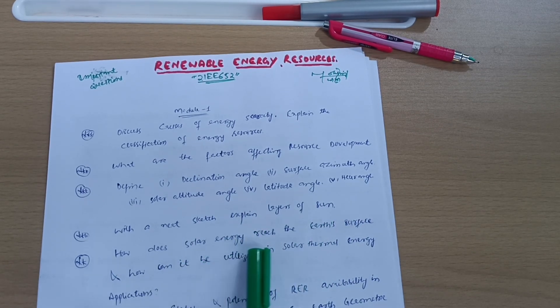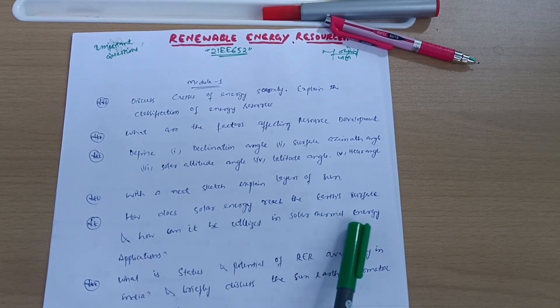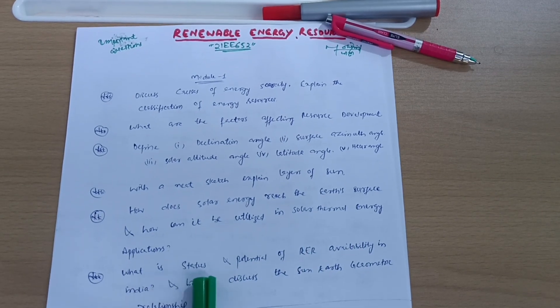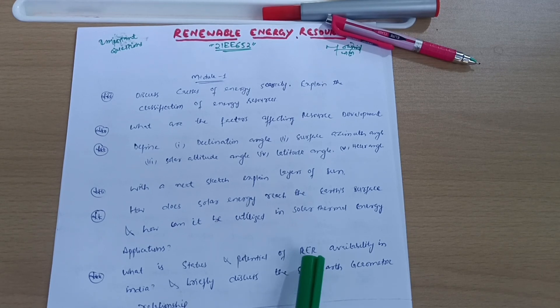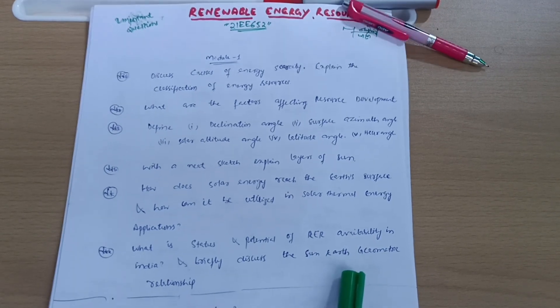With a neat sketch, explain layers of sun. How does solar energy reach the earth's surface and how can it be utilized in solar thermal energy applications? What is the status and potential of renewable energy resources availability in India, and briefly discuss the sun-earth geometric relationship. This is all about Module 1.